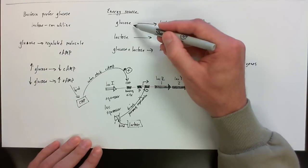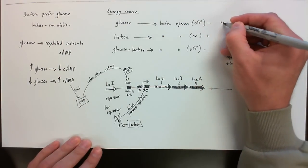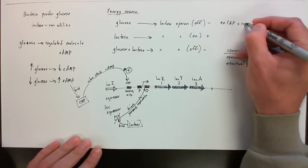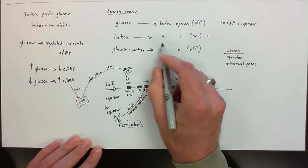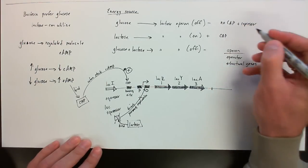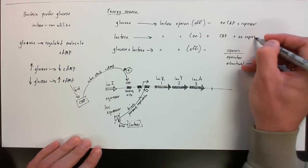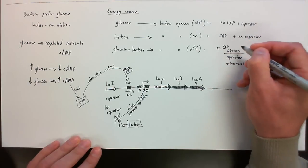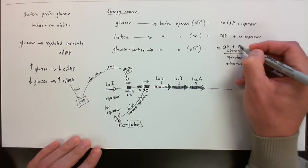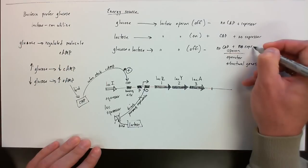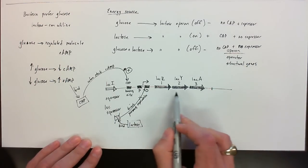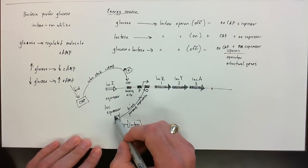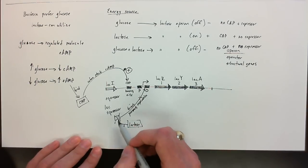So now we can redo things. When glucose is actually available, and it's the only thing, we have no CAP binding plus the repressor is binding. When lactose is there, we have CAP binding and no repressor. And then when we have glucose and lactose, we have no CAP, and we have the repressor. And no repressor, actually, because the lactose is binding to it and preventing it from working. So really, to turn this on, turn on these structural genes, we need both the CAP binding, and that's due to the cyclic AMP levels over here, and we want to prevent the repressor binding, and that's due to the lactose binding preventing it from expressing.